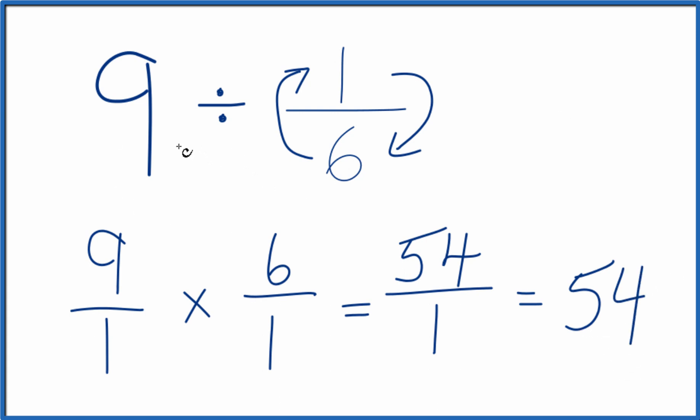So in answer to our question, 9 divided by 1/6 equals 54. If you take 54 and multiply it by 1/6, you'll get 9. This is Dr. B, and thanks for watching.